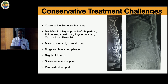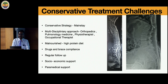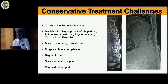Conservative treatment is the mainstay. We require multimodal support — pulmonary medicine, physiotherapist, occupational therapist — because rehabilitation is very important. The challenge is that this multimodal treatment given in-house must continue after discharge, as it is a continuum. Malnourishment from socioeconomic challenges affects nutrition significantly. Drug and brace compliance is a rampant problem. Socioeconomic and paramedic support especially at the primary level is going to be very important.